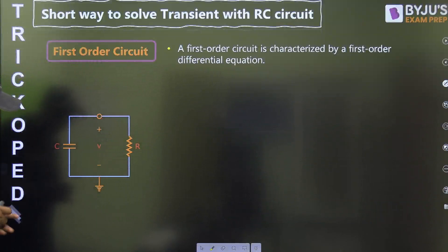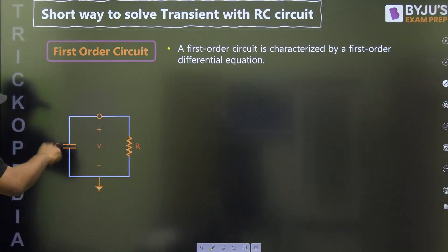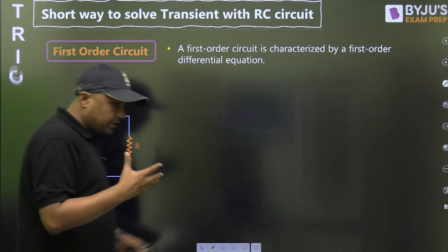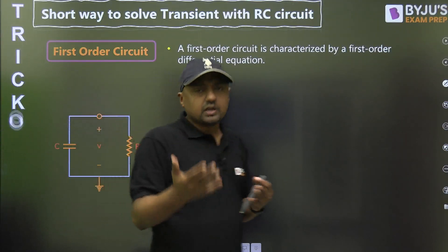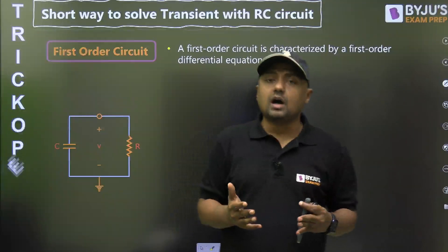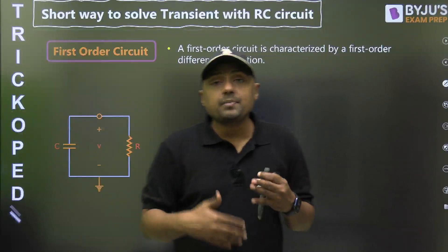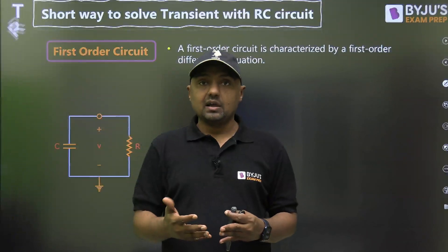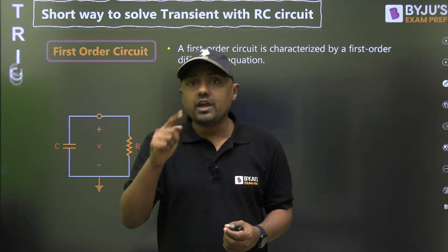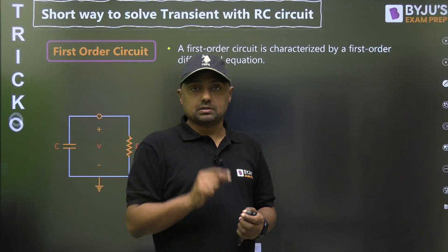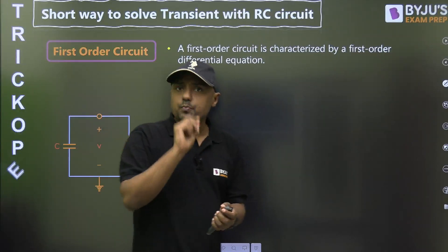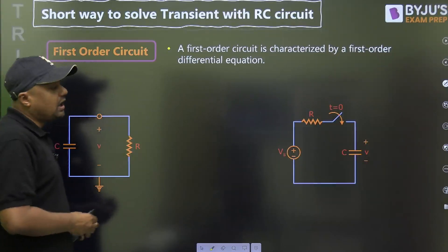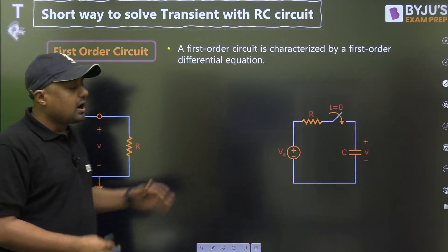Now, in this Trickopedia, we have two important circuits. The first is called the source-free RC circuit, where the capacitor is initially charged. When we connect the resistor R, the capacitor will discharge through R and will follow an exponential path.